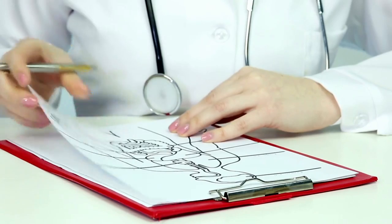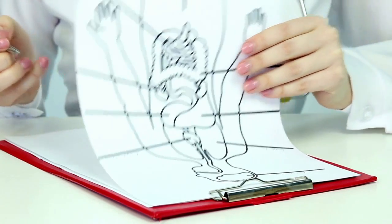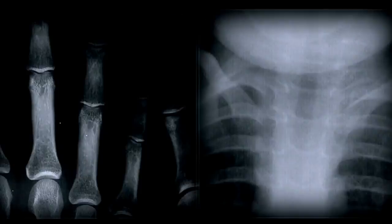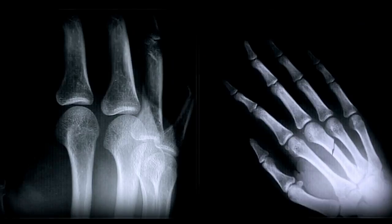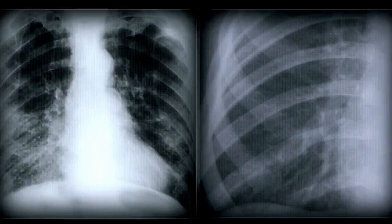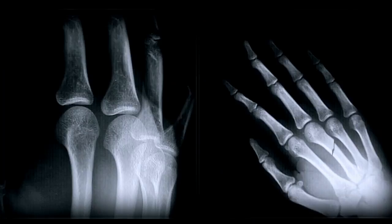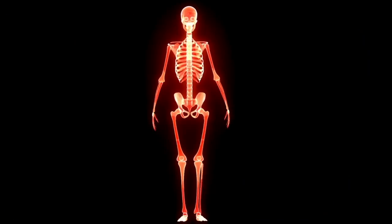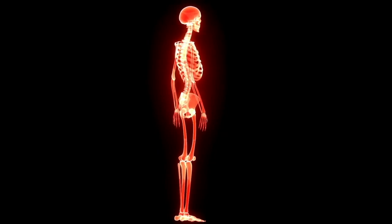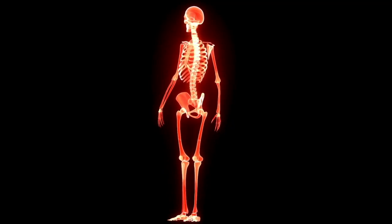When you're born you have 270 bones, and as you begin to age and approach adulthood, a lot of those bones have fused together and you're left with a whopping 206 bones. This sounds rather overwhelming, like you're never going to be able to memorize all the names of these bones and where they're located. But I have some fun tips in this video to help you do just that.